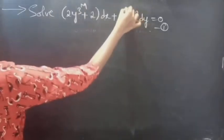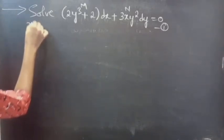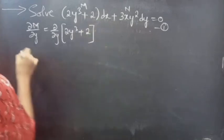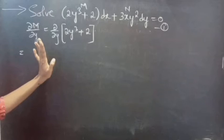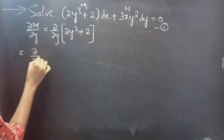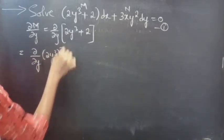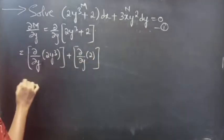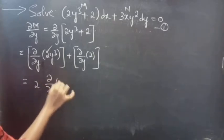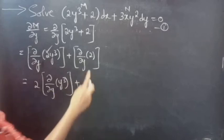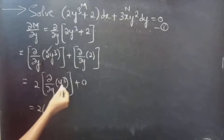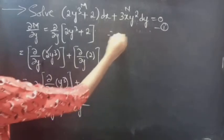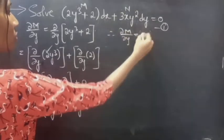This is your M and this is your N. Partial derivative of M with respect to y: ∂/∂y of (2y³ + 2). Since we are doing partial derivative with respect to y, x will be treated as constant. Partial derivative of the first term plus partial derivative of the second term: 2 × (∂y³/∂y) + 0 = 2 × 3y² = 6y². Therefore, ∂M/∂y = 6y².